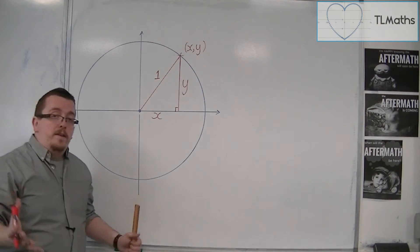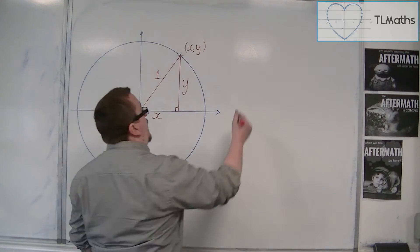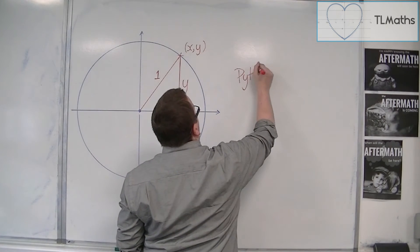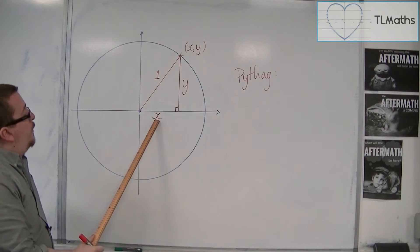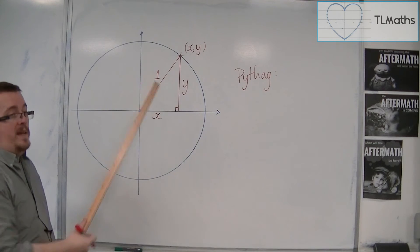And then Pythagoras' theorem would say that x squared plus y squared must be equal to 1.